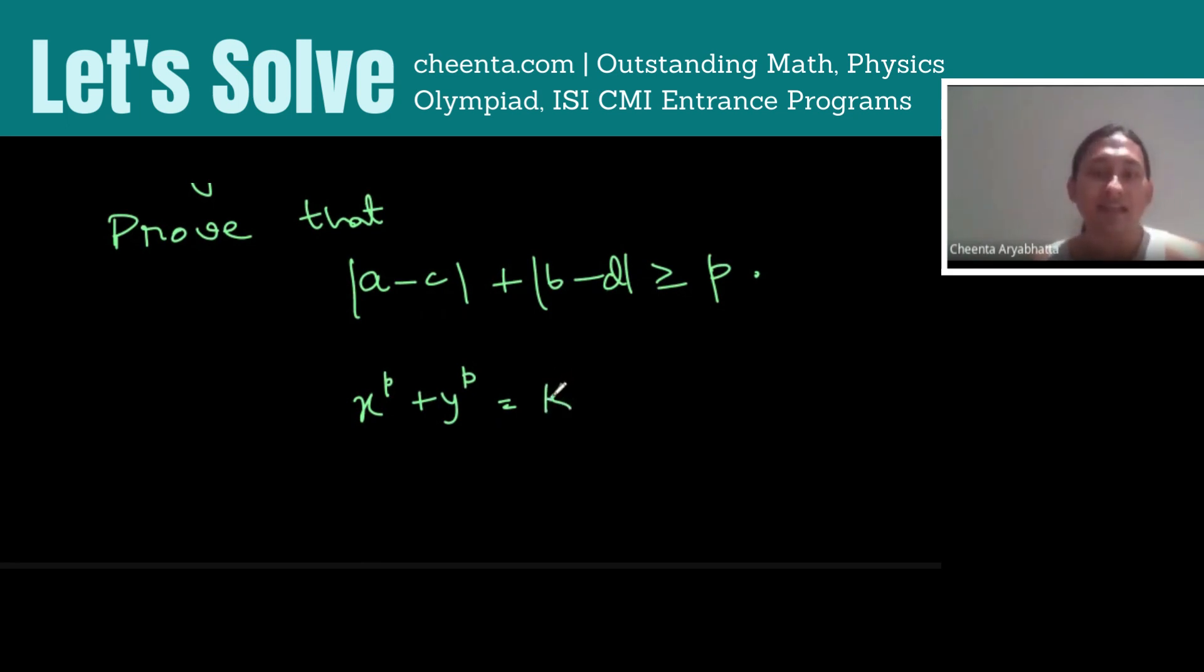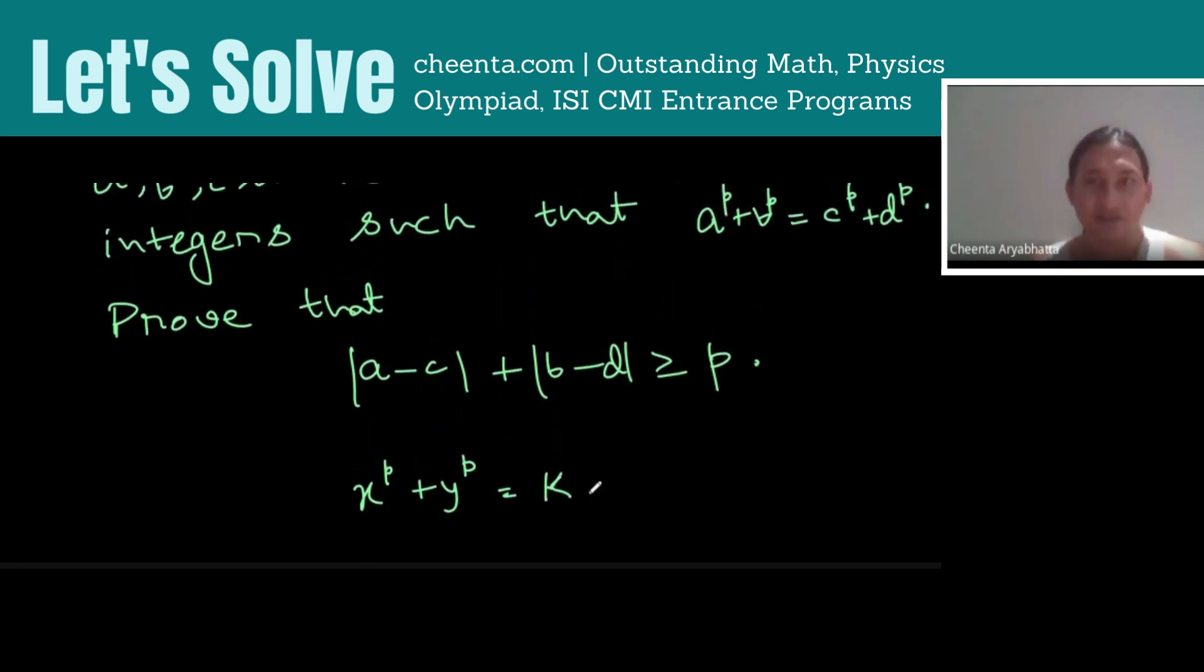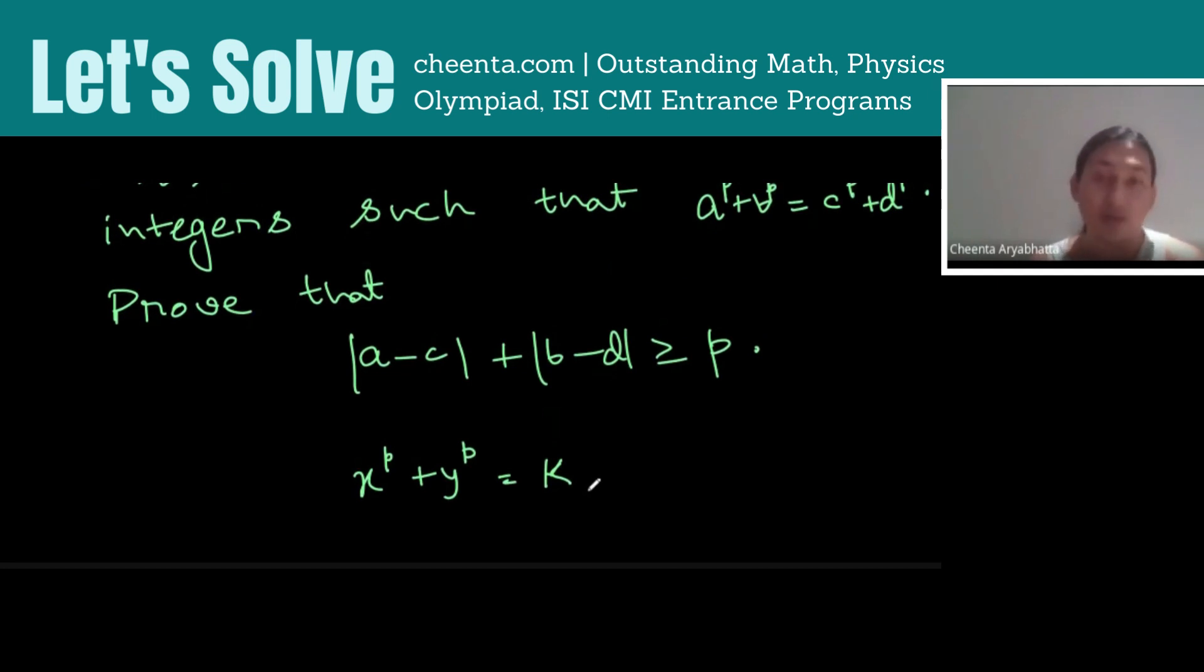then the integer solutions to this equation, which we call lattice points by the way, are somewhat far away. You cannot have two integer solutions that are very close on the curve. I hope that makes sense.